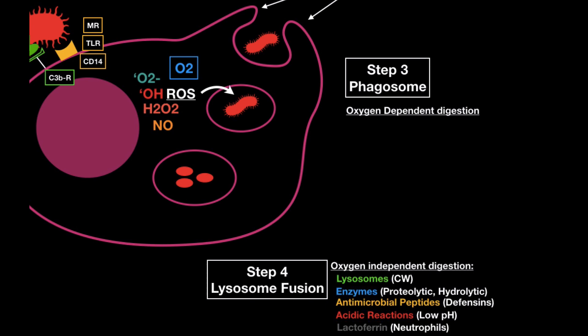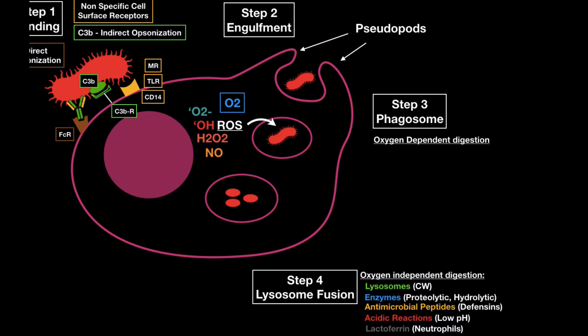This is called oxygen-independent mechanism. I used the example of lysozyme, which breaks down cell wall. It can also release proteolytic or hydrolytic enzymes, or even antimicrobial peptides like defensins, or even lower the pH, or release lactoferrin in case it's a neutrophil, for example. Different phagocytes can release different things.